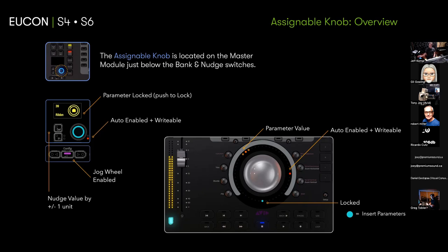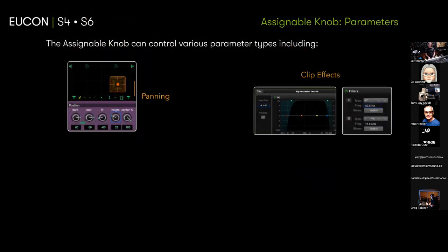Question: once the jog wheel is enabled, does it stay that way — so you don't have to continually manage it? You can just hover over different things and they go to both the assignable knob and the jog wheel? Exactly — it's a mirrored function. Think of it as an A/B: A is hover and do a bunch of stuff using the jog, or B is lock something you'll repeatedly use while still working on the desk with custom faders and knobs.